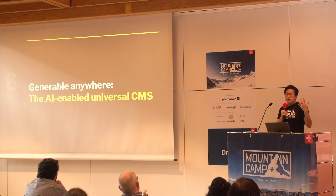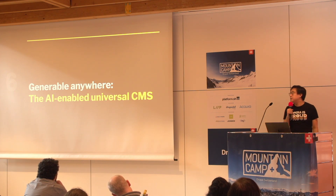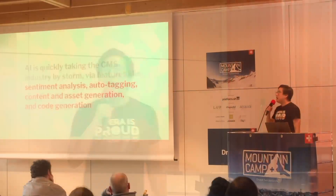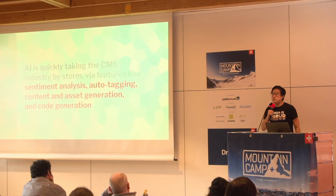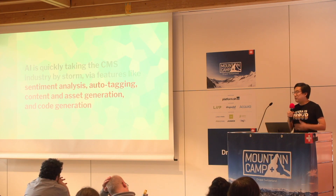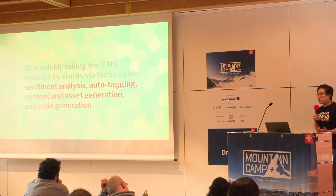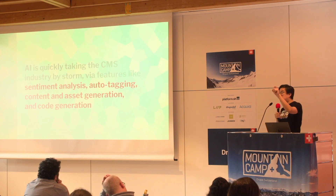There's also a really interesting future state of CMS I want to talk about: the concept of a universal CMS being generable anywhere — the AI-enabled universal CMS. AI is taking the CMS industry by storm. We've seen key AI features begin to emerge: sentiment analysis, auto-tagging, auto-assignment of taxonomy terms, and increasingly more content generation and asset generation — for example, generating a summary of an article, which can be faster than writing it yourself.